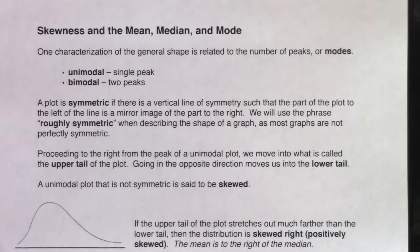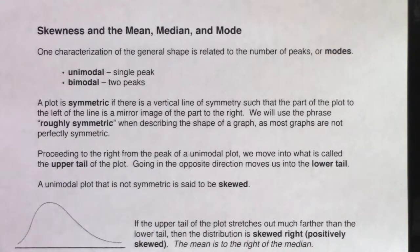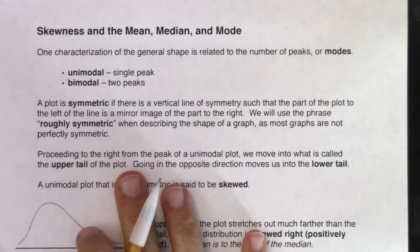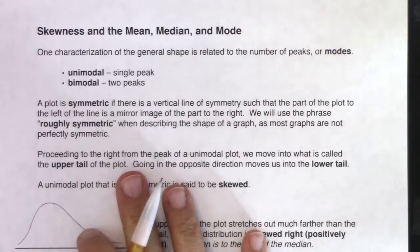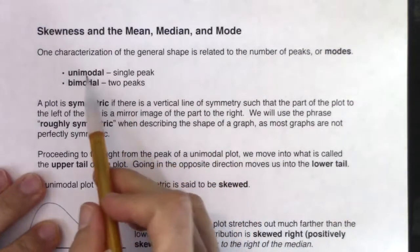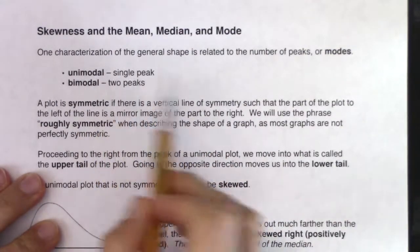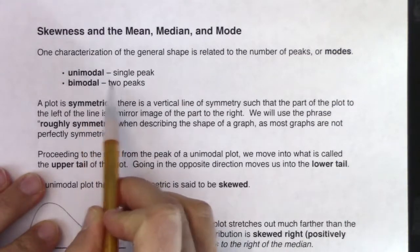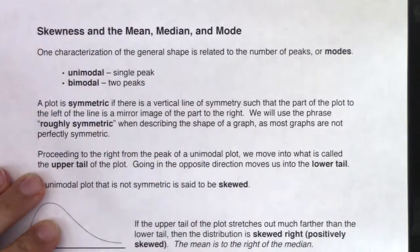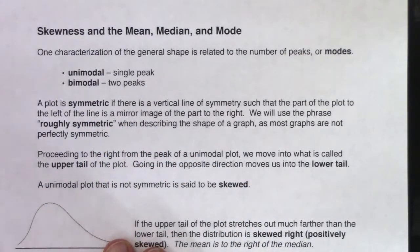Let's start to talk about the shape of our graph, this term called skewness, and how it relates to the mean, median, and mode. One characterization of the general shape of your graph is related to the number of peaks, or modes. You might use the phrase unimodal if you have a single peak. If you have two peaks, we call that bimodal. Three peaks is trimodal, and four or more we call multimodal.